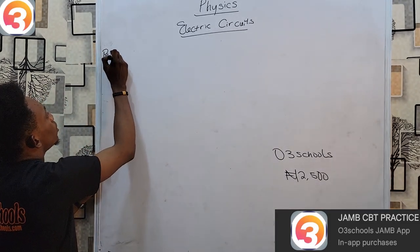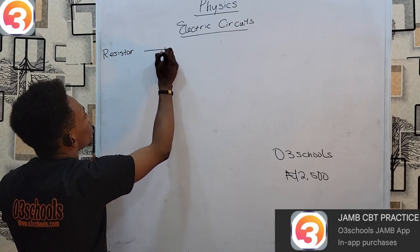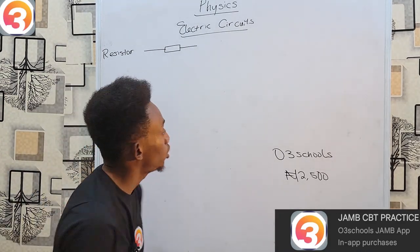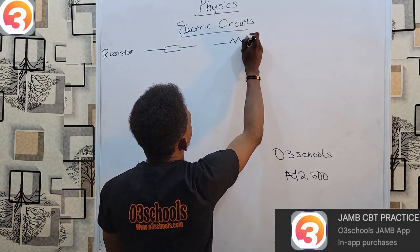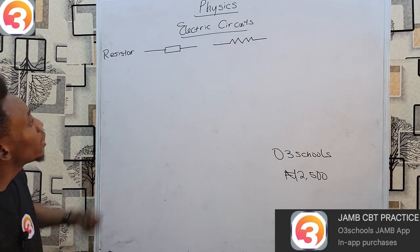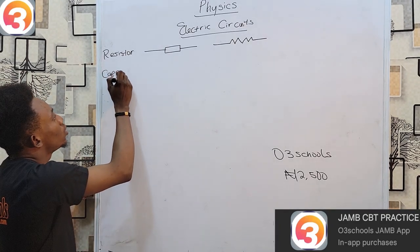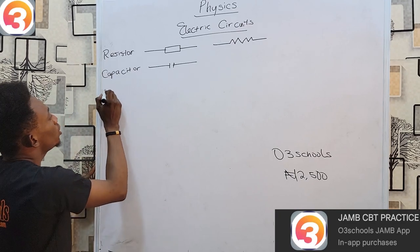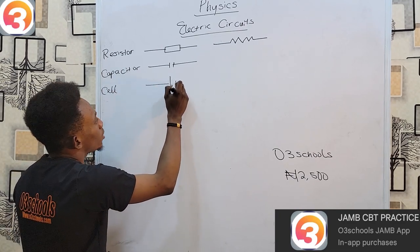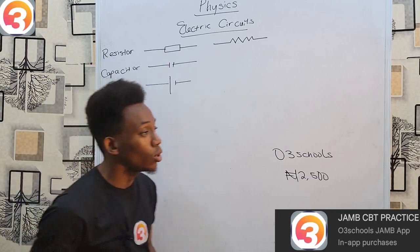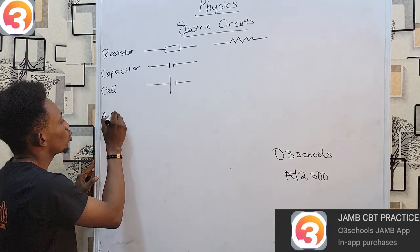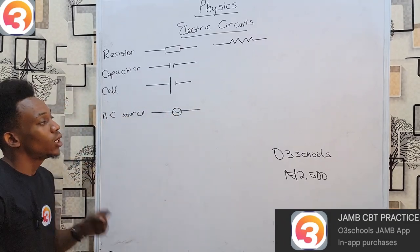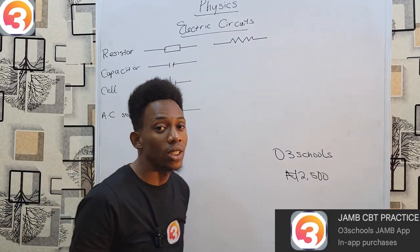A resistor is represented with a rectangular box symbol. In some past questions you may also see resistors represented with a zigzag line. For a capacitor, we use two parallel lines. Your cell or battery is represented similarly to the capacitor but one line is longer than the other. Your AC source — what we call NEPA lights in Nigeria — is shown in circular wave form, while the DC from your cell or battery uses the long-short line symbol.